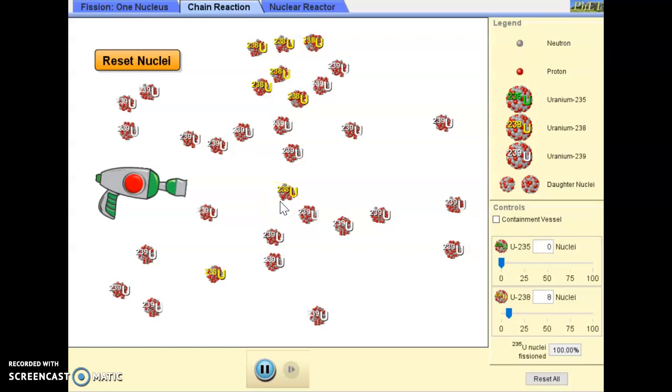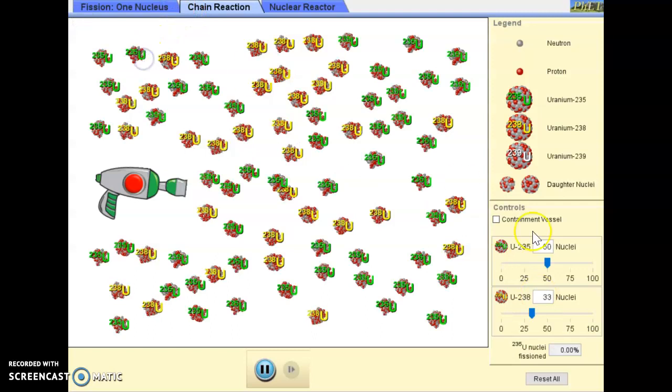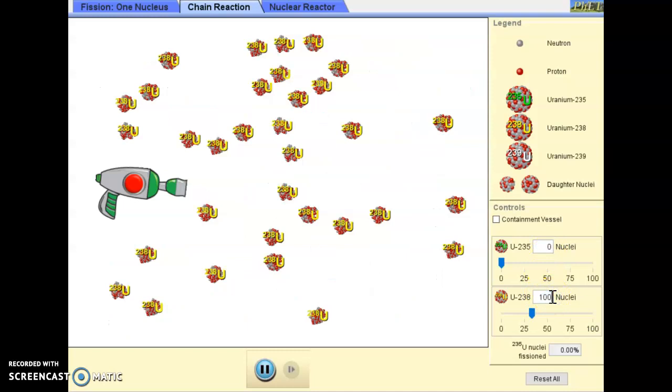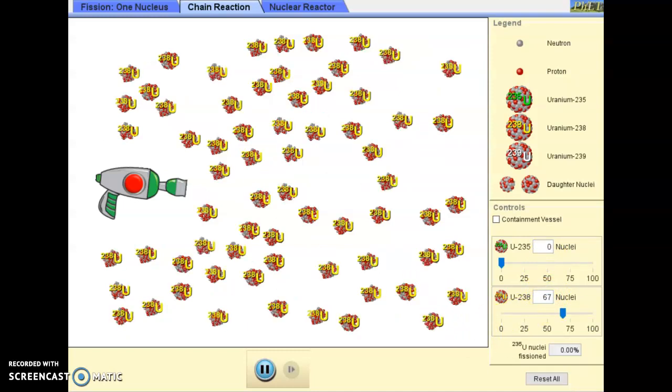I think we can answer question number 12. What happens to the reaction as the proportion of 238 increases? Well, as you can see, if I have more and more 238, the amount of reaction happens decreases. And if I have 100% uranium 238, the reaction can't occur at all.